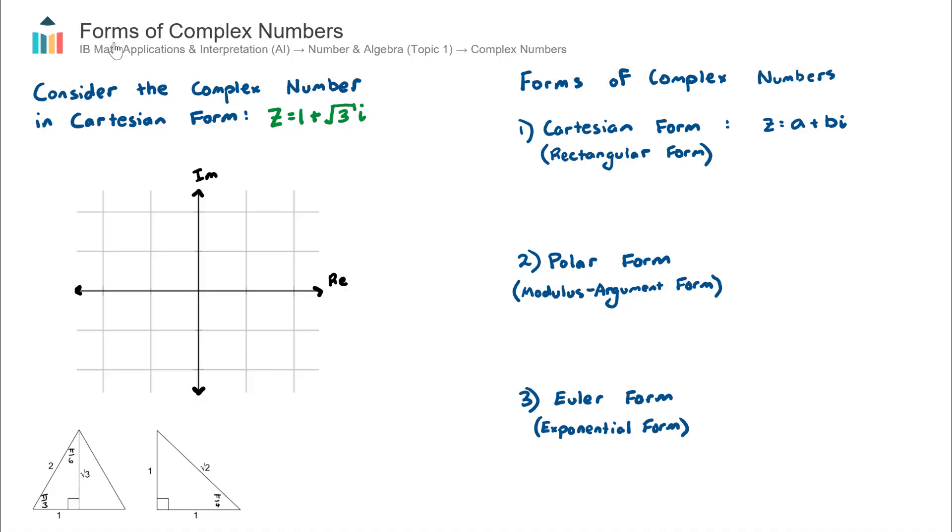In this video, we look at the three different forms of complex numbers that you will encounter in your Maths IA course. Those forms are Cartesian form, which is also known as rectangular form. We covered that form in the video prior to this, Introduction to Complex Numbers.